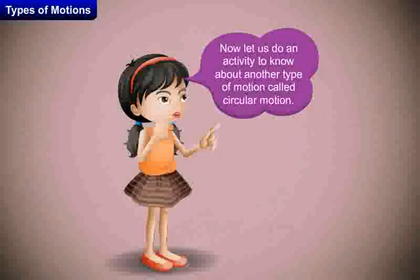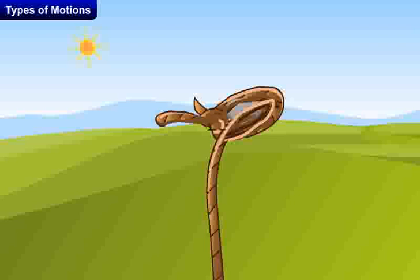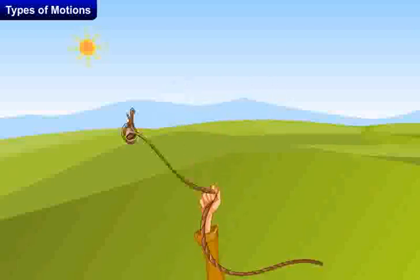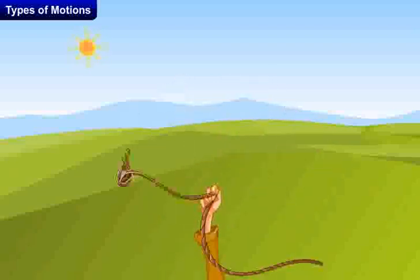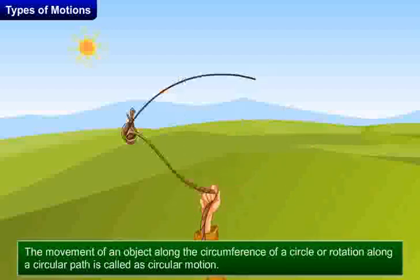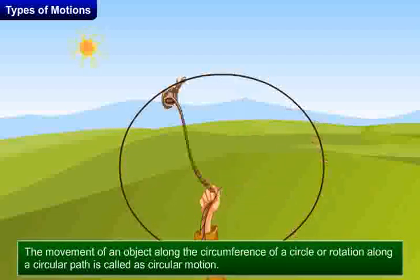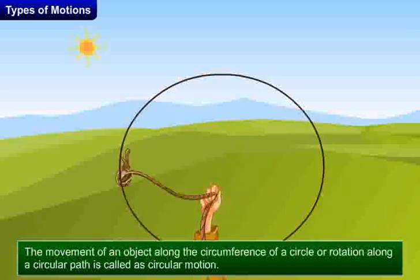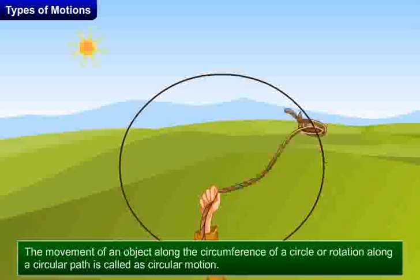Now, let us do an activity to know about another type of motion called circular motion. Take a stone, tie a thread to it and whirl it with your hand. Observe the motion of the stone. We see that the stone moves along a circular path. In this motion, the distance of the stone from your hand remains the same.